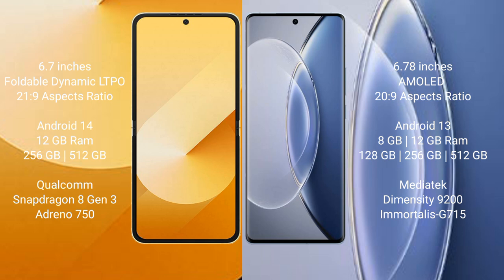Vivo X 90 comes with 8GB or 12GB RAM and 128GB, 256GB, or 512GB storage. It is powered by the MediaTek Dimensity 9200 processor with GPU G715.